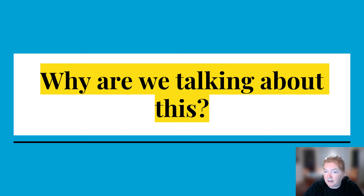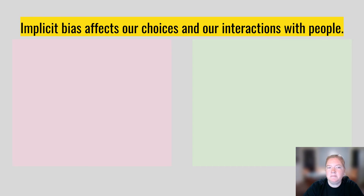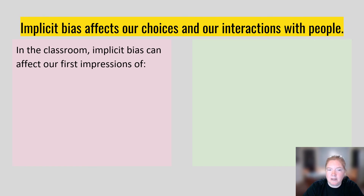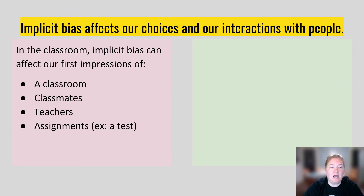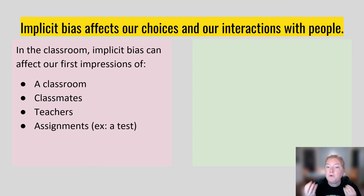So why are we talking about it in this class? Implicit bias affects our choices and our interactions with people. In the classroom, implicit bias can affect our first impressions — of the classroom in general, our classmates, the teacher, assignments. For example, when somebody says it's time for a test, you have an assumption, an implicit bias, about what that means.